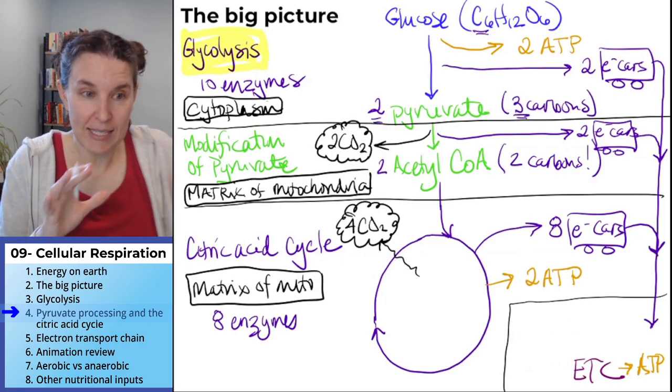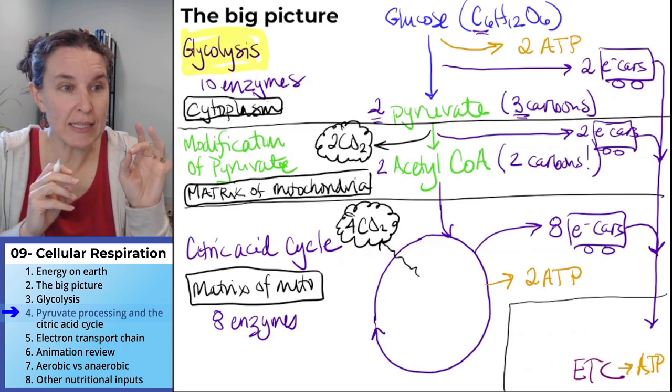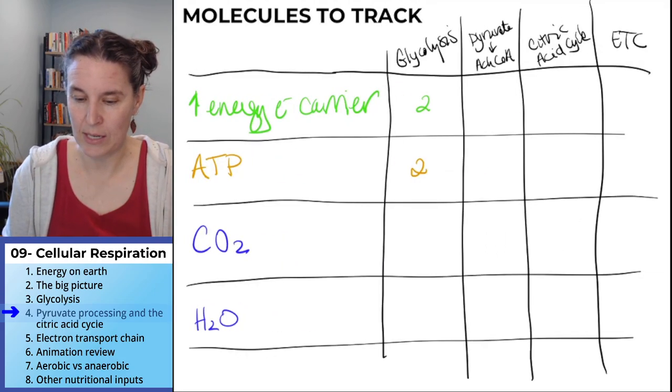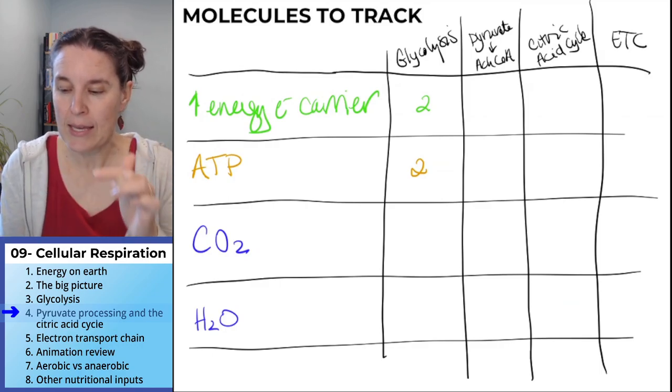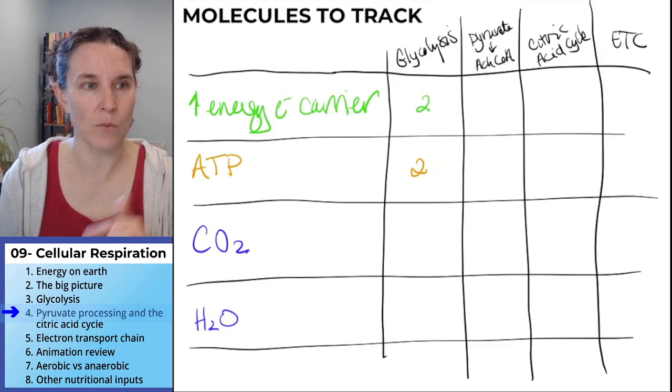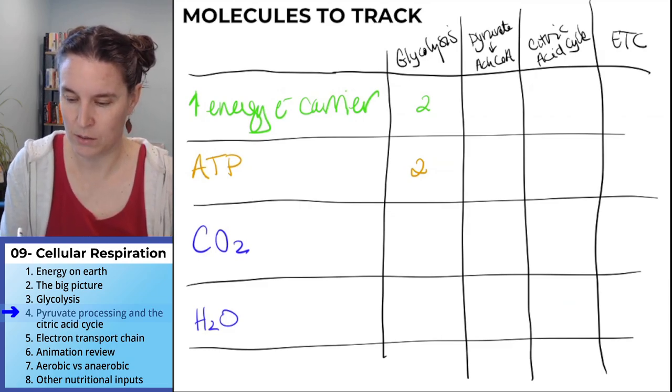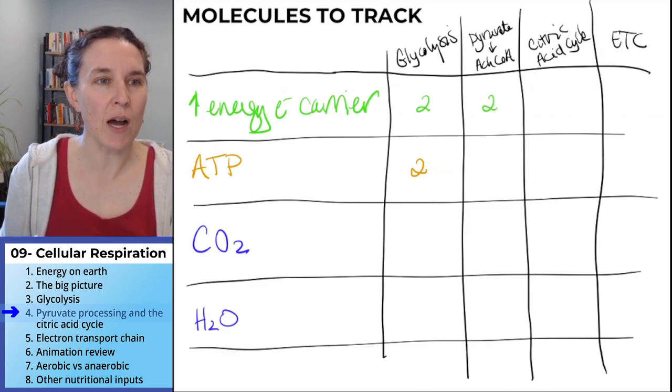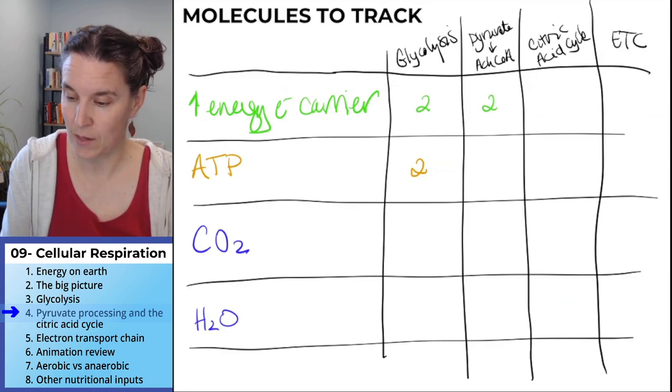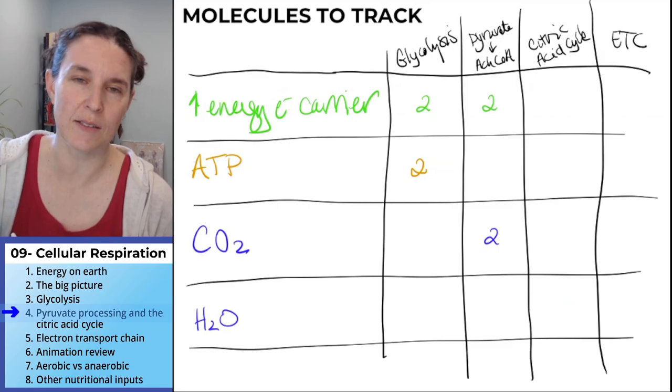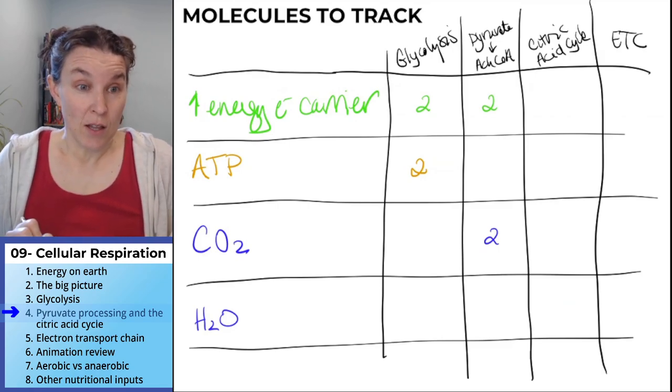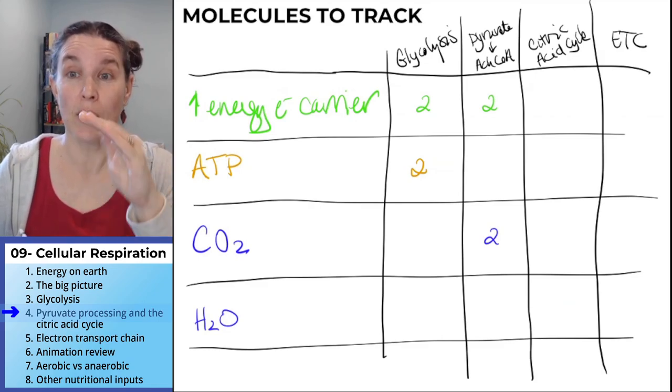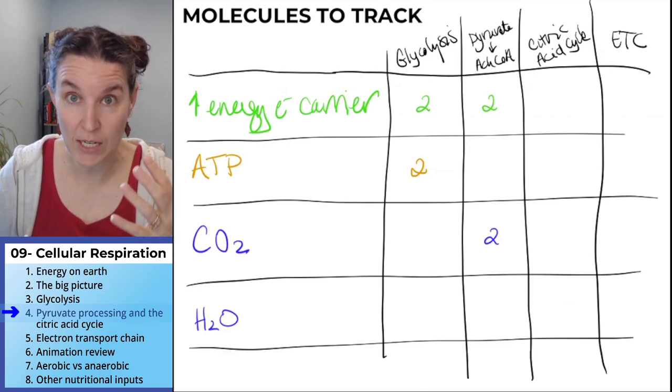Let's take this information and complete our chart. In the pyruvate, two acetyl-CoA. Remember that we got two electron cars. My colors are changing. It's purple in the other one. And we got two carbon dioxides. I don't know if I'm going to keep up with all my colors here. That's it. That's all I'm seeing. That's all I'm seeing in, to keep track of in our pyruvate modification stage.